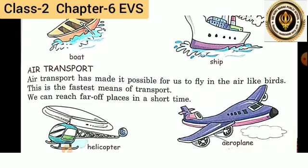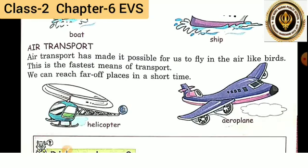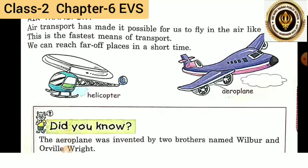Next is air transport. Air transport has made it possible for us to fly in the air like birds. We have no wings but we can fly in the air with the help of air transport. This is the fastest means of transport and we can reach far off places in a short time with the help of these types of transport.